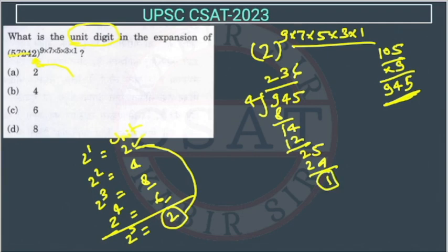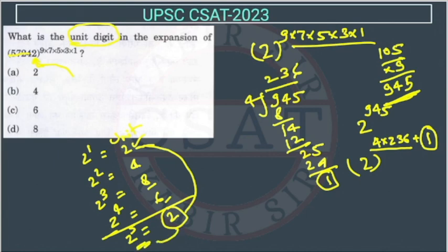So the remainder is 1, so we can write this expression like 2 to the power 945, then we can write it like 2 ki power 4 into 236 plus 1. The unit digit will depend upon this thing because as I told you here, it will start repeating. So this is like 2 to the power 1, so the unit digit is 2. So the answer of this question is option A.